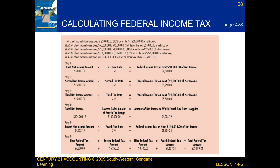Then we take the total net income amount and subtract it from the lowest dollar amount of the fourth tax range, and that will give us the amount of net income to which the fourth tax rate is applied. Next, we take the fourth net income amount and multiply it times the fourth tax rate, and that will give us the federal income tax on the next $140,914 of net income. And finally, if we take all the numbers except for the $4,203.19 and add them up, that will give us the total federal tax amount.